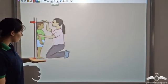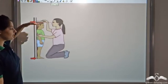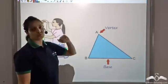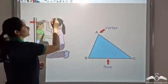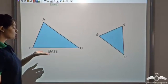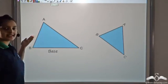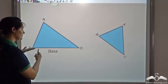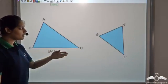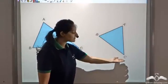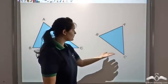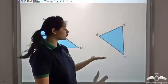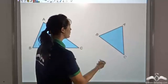Since we measure our height from foot to head, the height of a triangle is measured from the base to the opposite vertex. The base of a triangle can be any of its sides — usually the side at the bottom is taken as the base, so we say BC is the base.